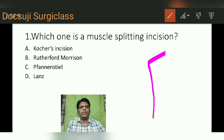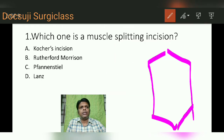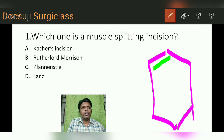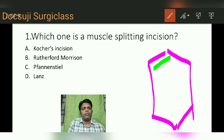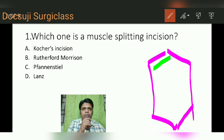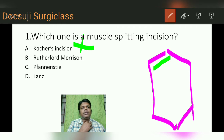Cocker's incision is an incision placed in the right subcostal region, 2 centimeters parallel and below the right subcostal margin. It is commonly used for cholecystectomy, CBD exploration, and liver surgeries. In this incision you cut all the muscles crossing your incision line, so Cocker's incision is a muscle cutting incision.